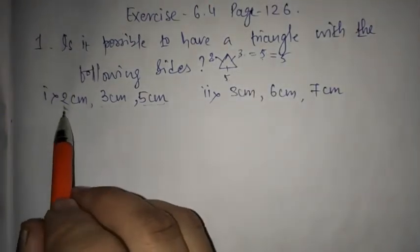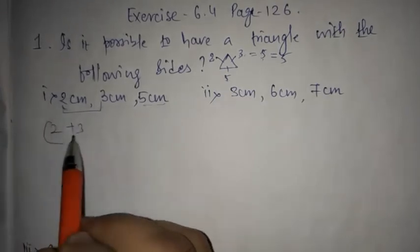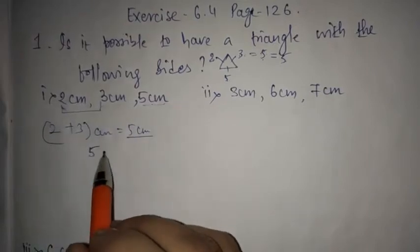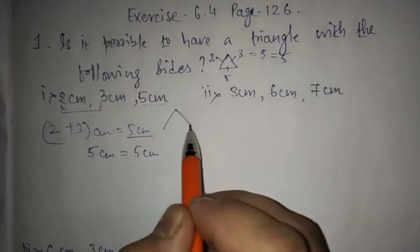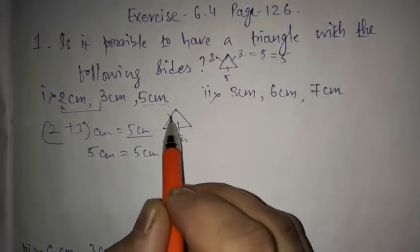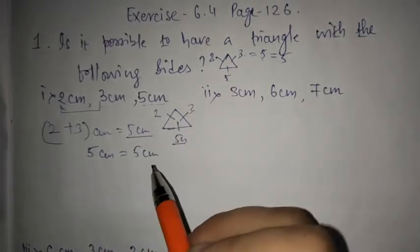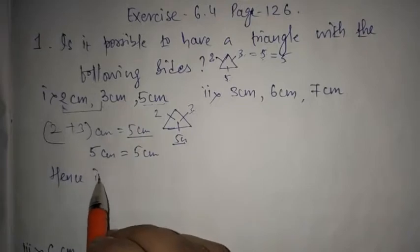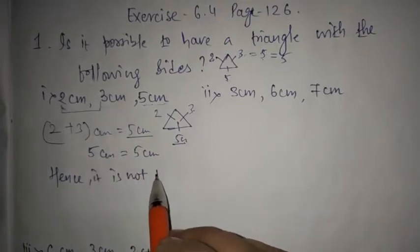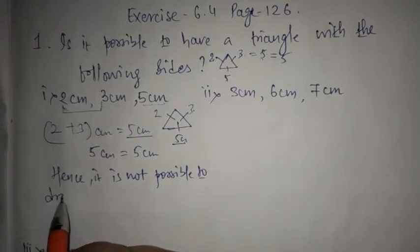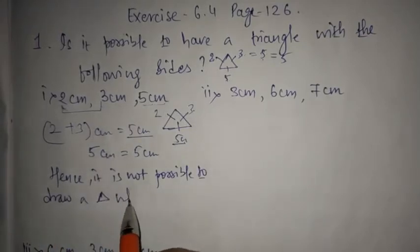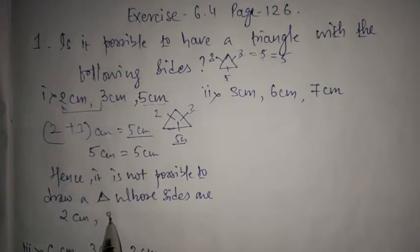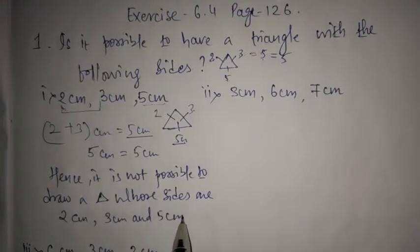So here, 2 plus 3 is equal to 5 cm. This 5 cm is not greater than the other side of the triangle, which is also 5. When you add 2 and 3 you get 5, which is equal to 5. Hence, it is not possible to draw a triangle whose sides are 2 cm, 3 cm and 5 cm.